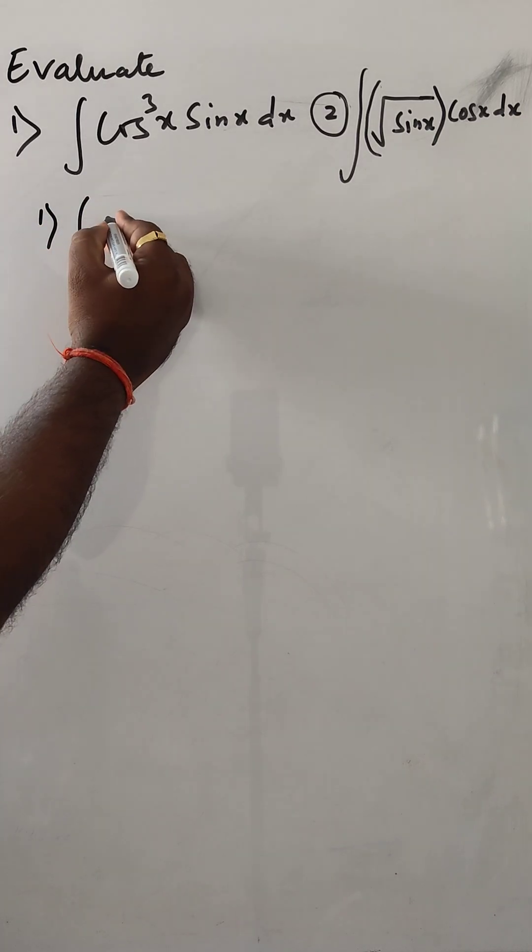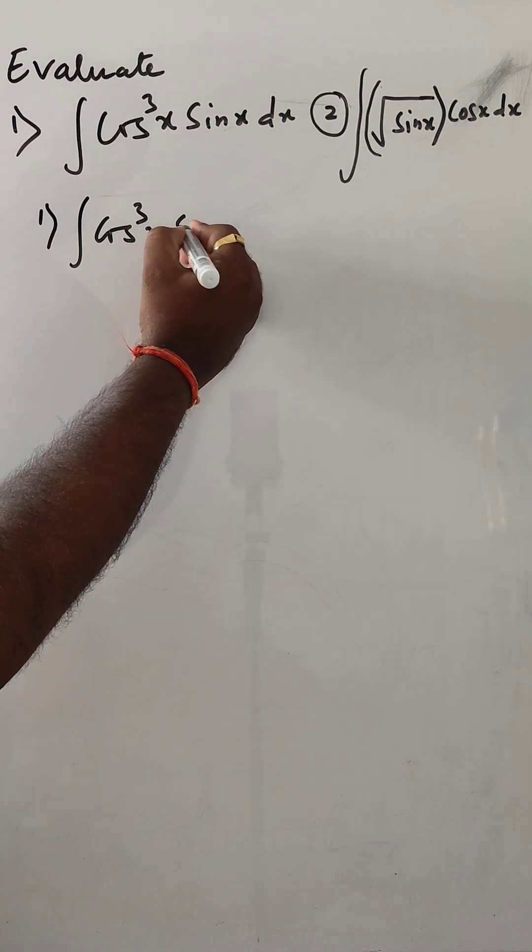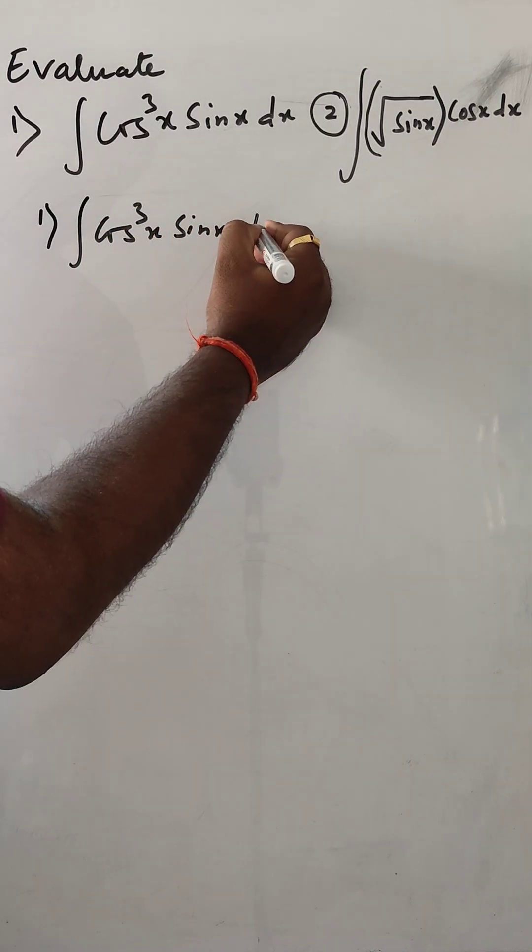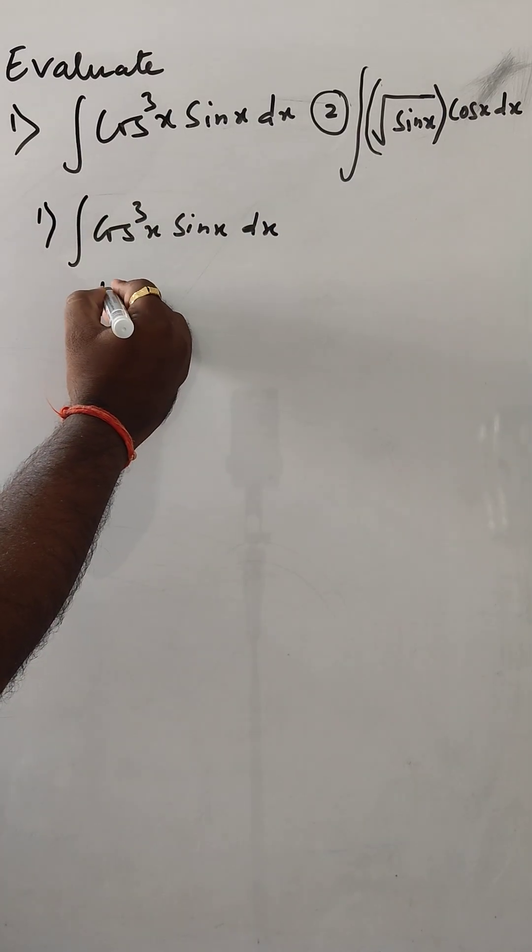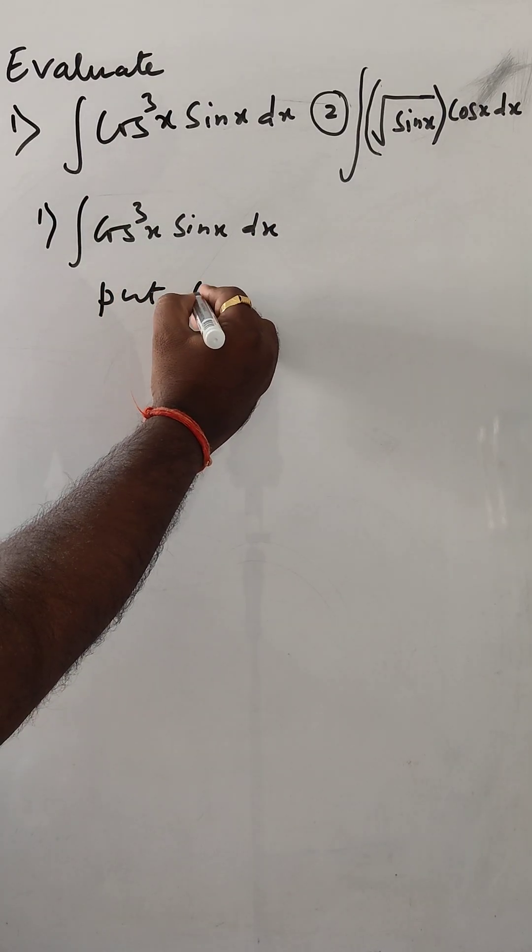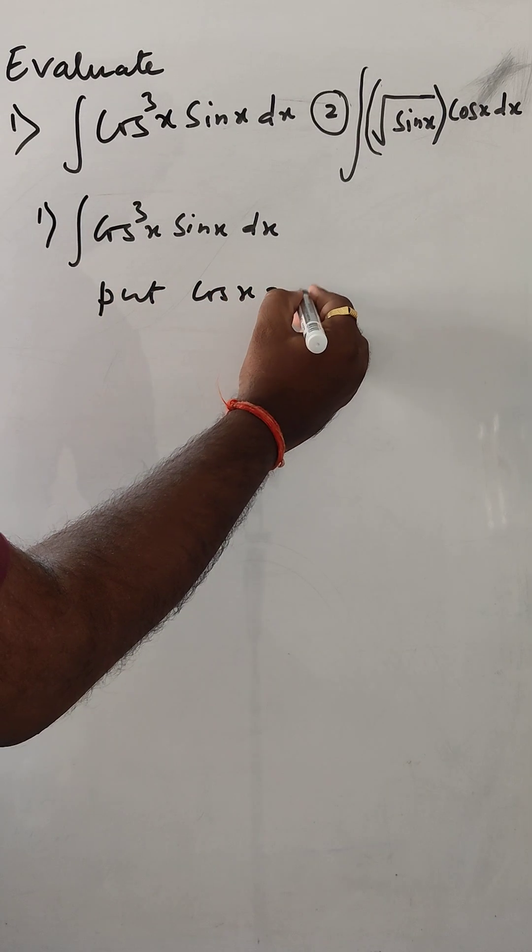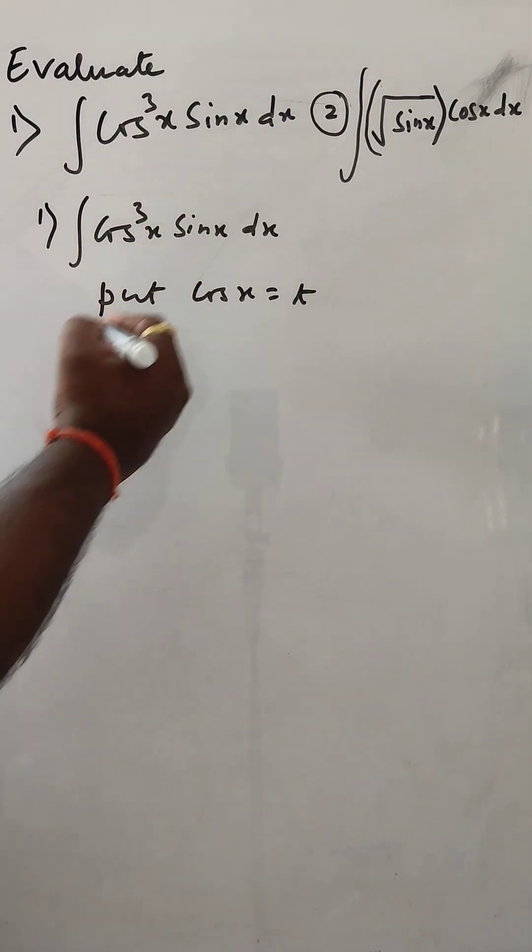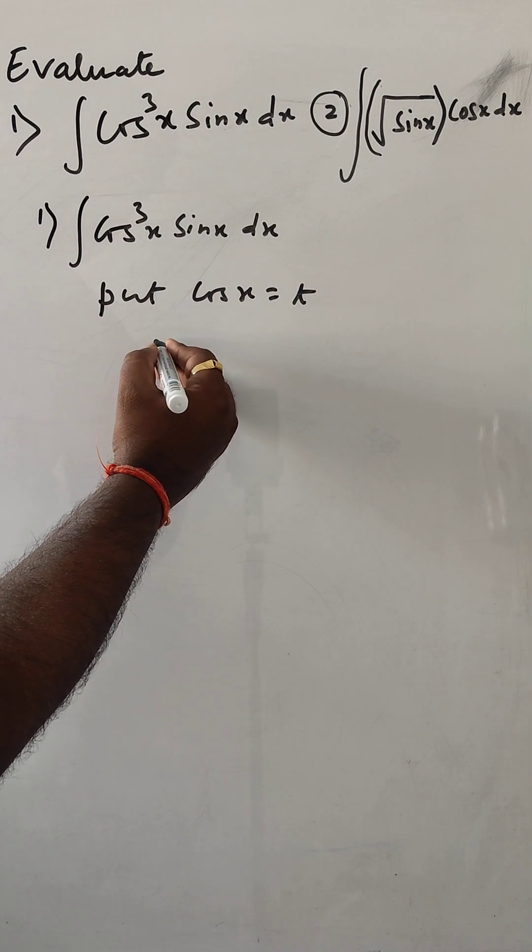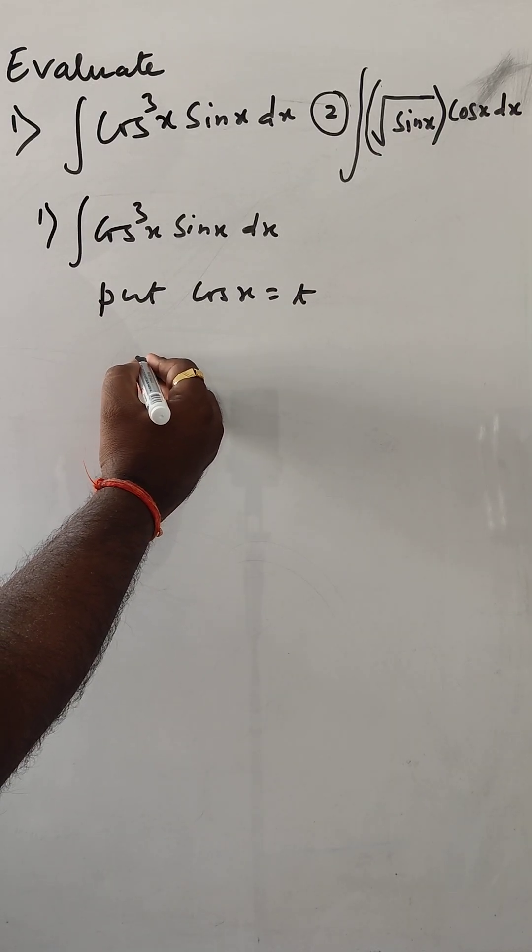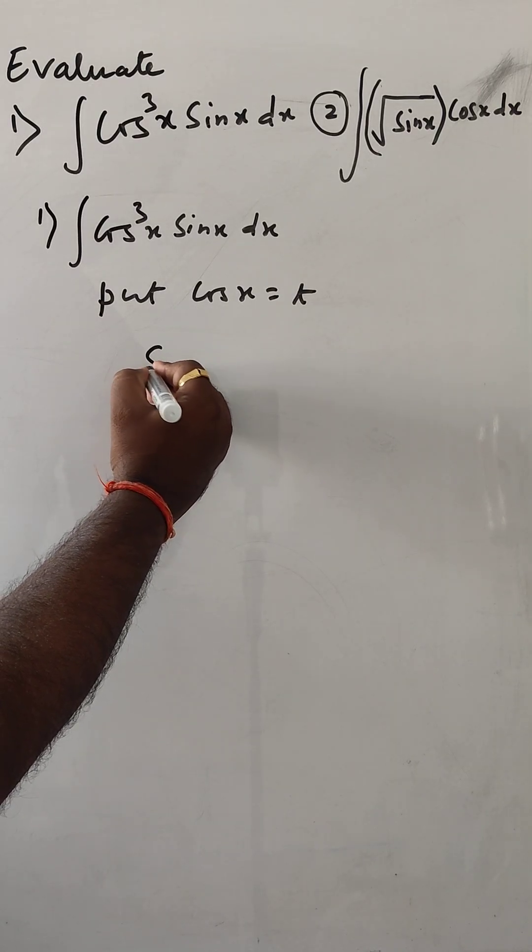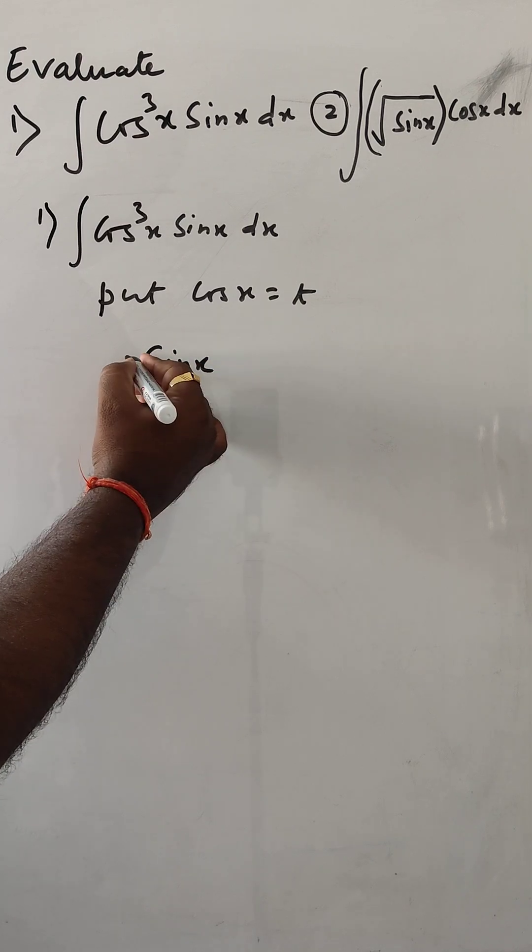First one: integral of cos^q x sin x dx. Put cos x equal to t. So for cos x, the derivative will be minus sin x, right?